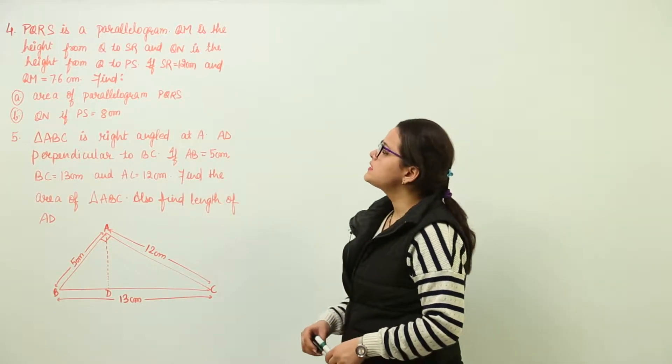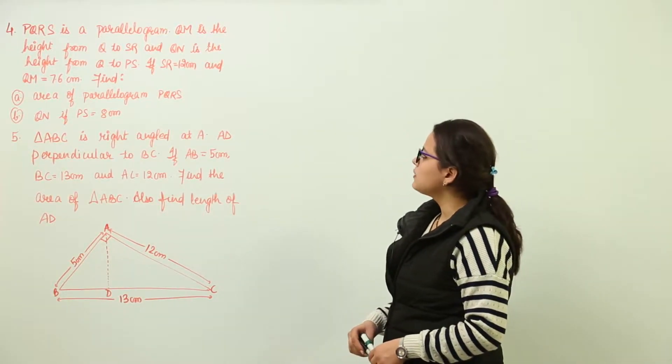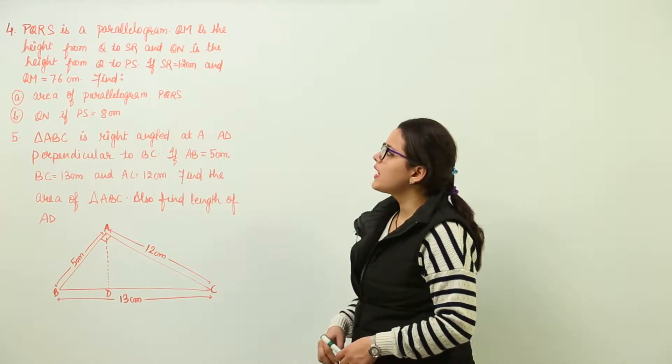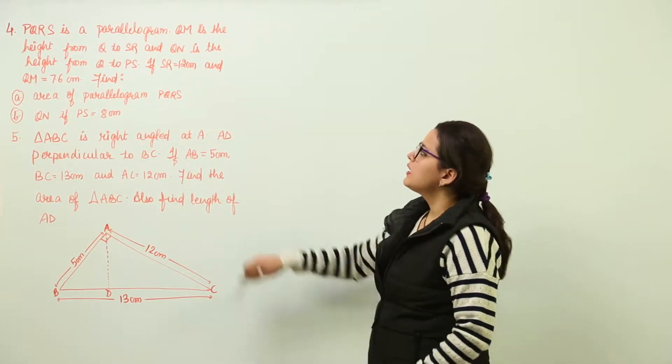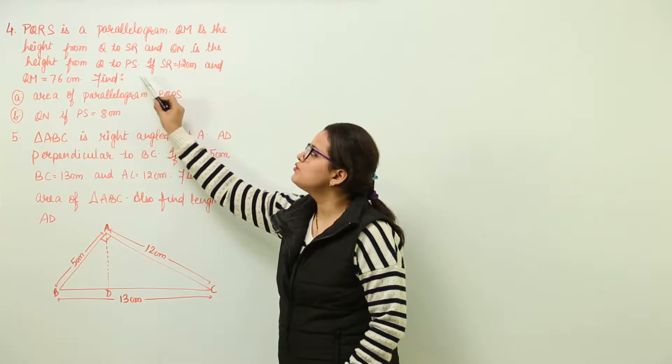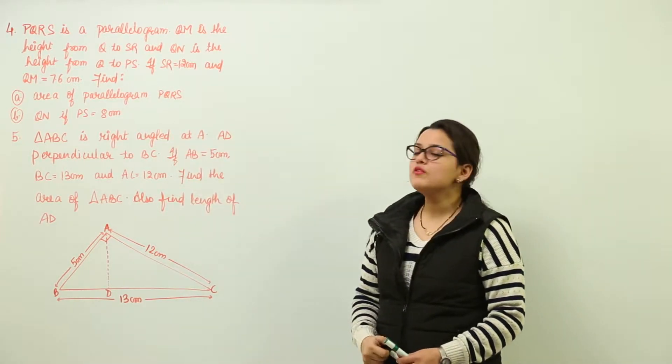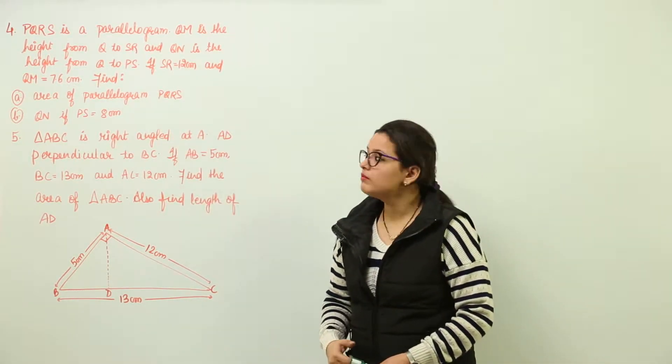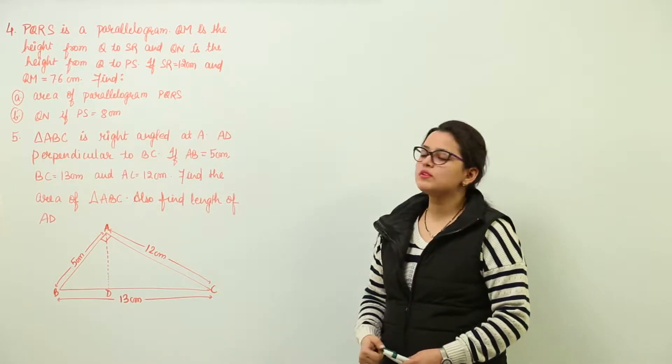The next question we have is PQRS is a parallelogram where QM is the height from Q to SR and QN is the height from Q to PS. If SR is given as 12 and QM is given as 7.6...